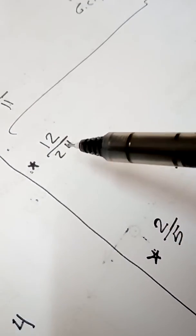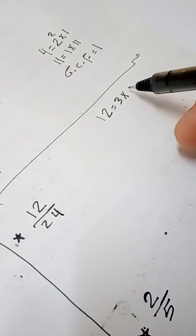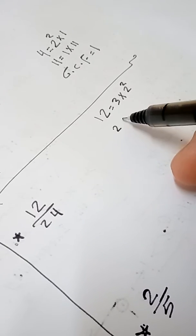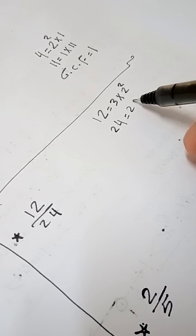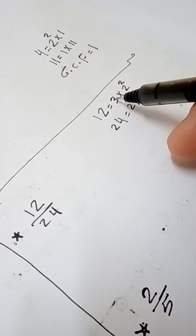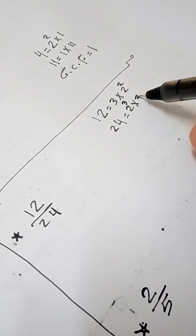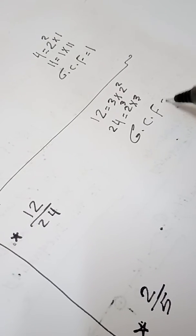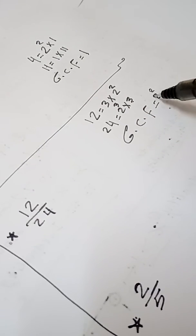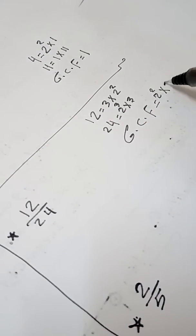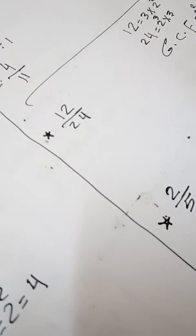Here we have 12 over 24. Take 12 — 12 equals 3 times 4, and 4 equals 2 times 2, so 12 equals 3 times 2 exponent 2. And 24 equals 2 times 12, so 24 equals 2 exponent 3 times 3. Now find the GCF: the common factors are 2 in the lowest exponent (2 exponent 2) and 3, so GCF equals 4 times 3 equals 12.